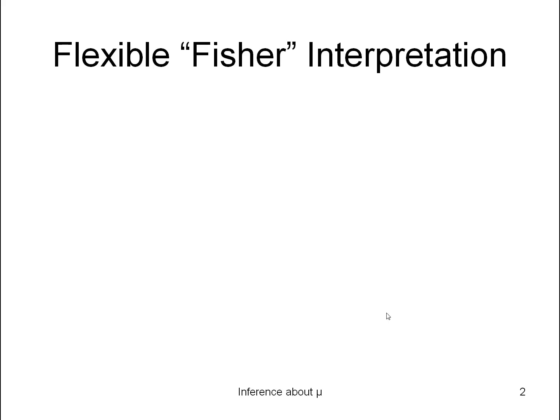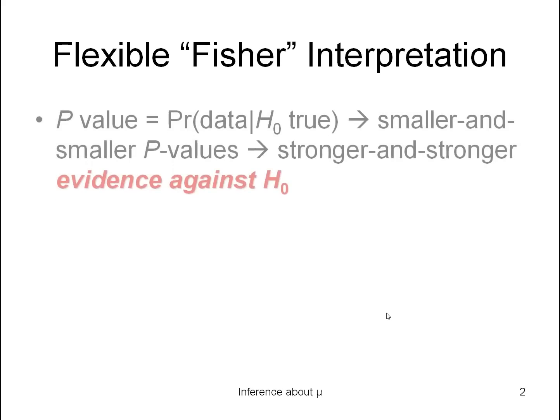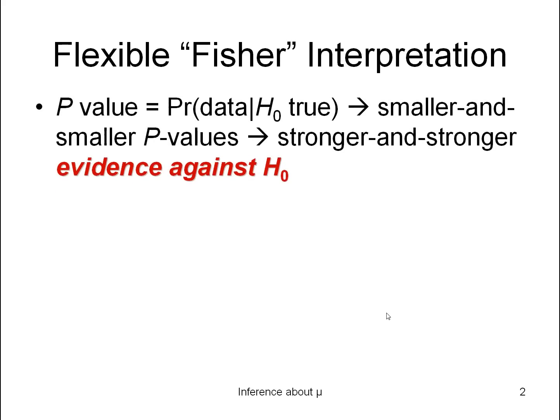Let me present these two approaches. The first we'll call the Fisher approach. In this method, it's based upon the derivation of the p-value as the probability of the data, or data more extreme, assuming the null hypothesis is true. This implies that smaller and smaller p-values provide stronger and stronger evidence against the null hypothesis.